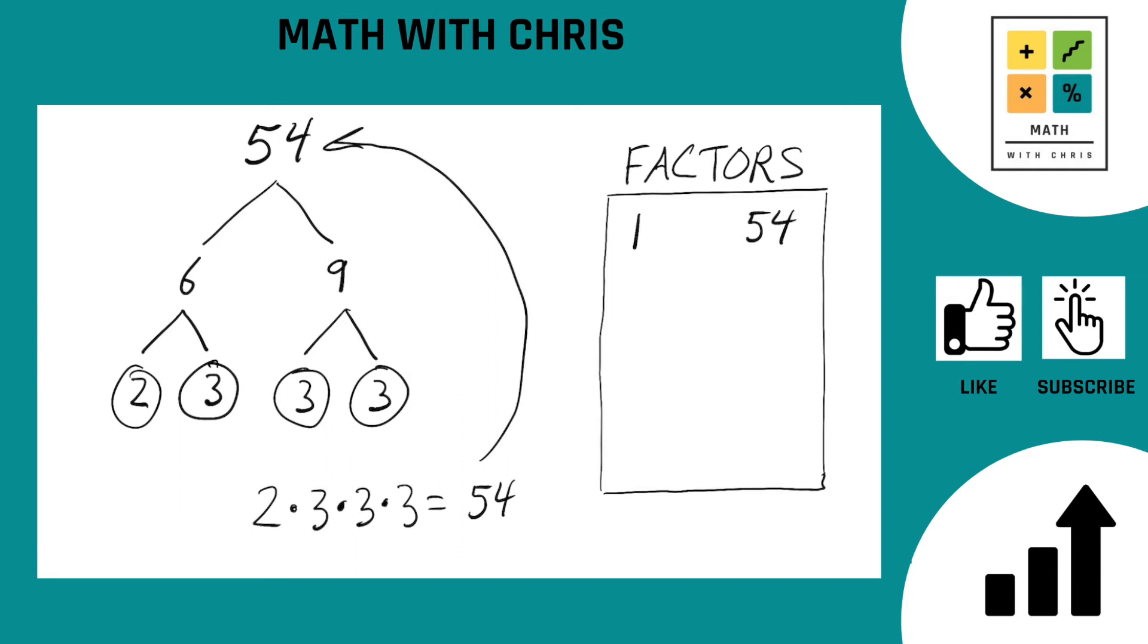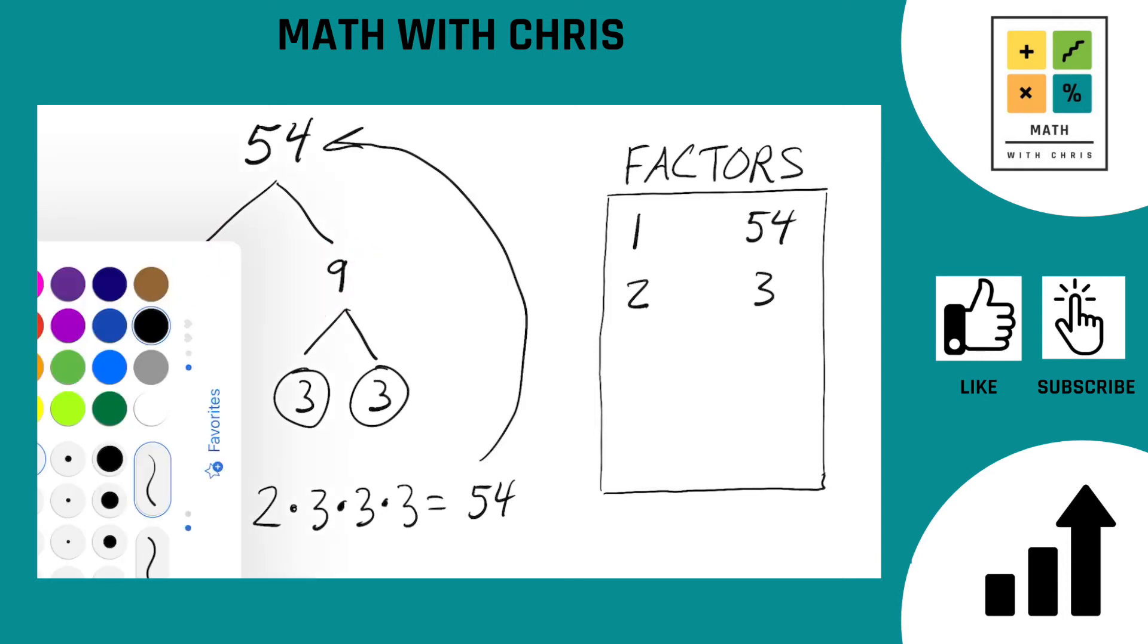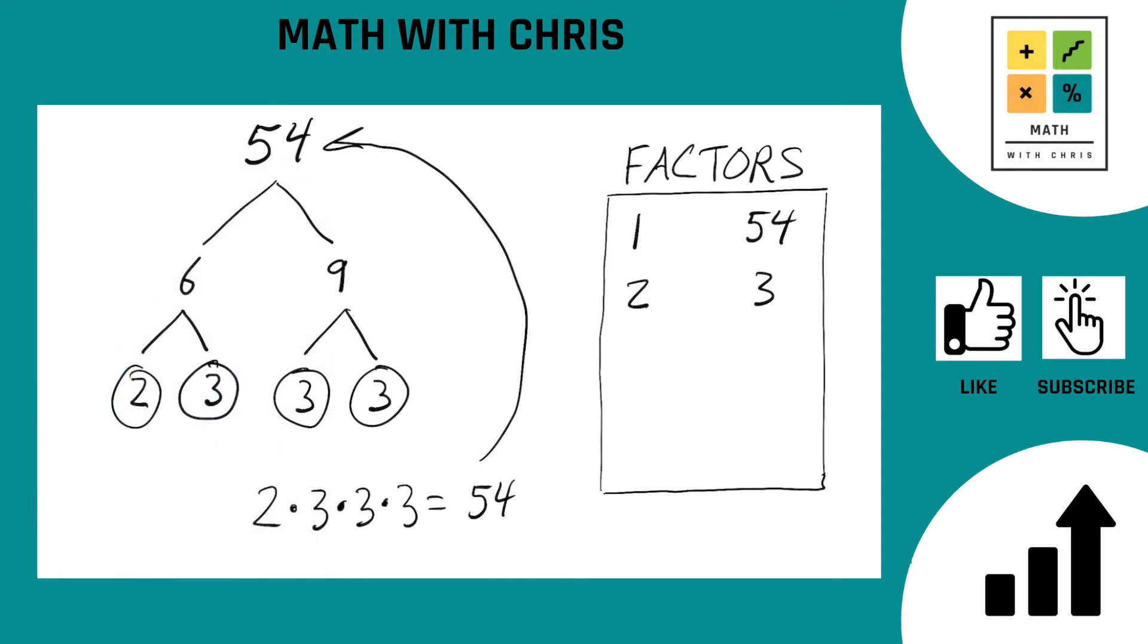Now we need to bank the prime numbers we found. Well we found the 2. Bank that. And we found the 3. Bank that. And any numbers we hit along the way in the factor tree get banked as well. Now we hit a 6 at one point. And of course we hit a 9 at one point. So let's go ahead and bank the 6 and bank the 9.